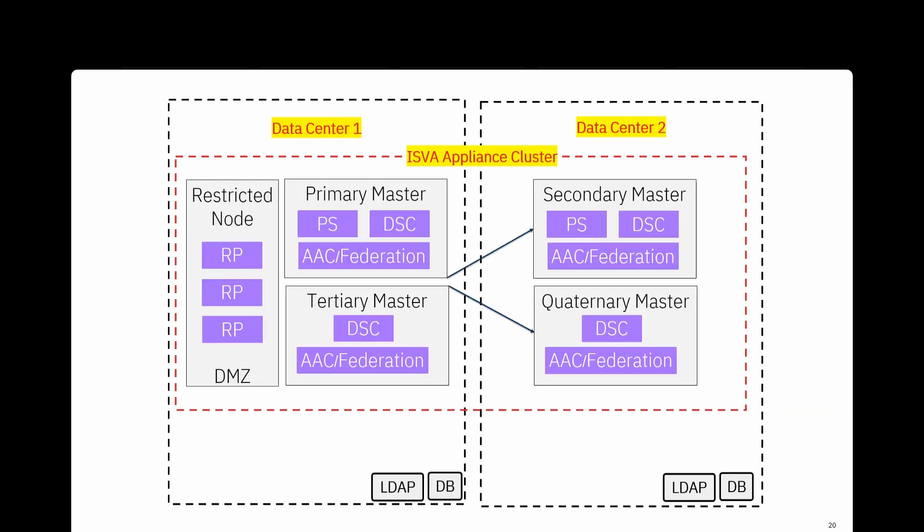Each appliance hosts different components: the restricted node hosts the reverse proxy and handles all incoming public traffic. The primary master runs the policy server, distributed session cache, and AC federation runtime, and similarly the secondary master. If there are network connectivity concerns between data centers, you may keep both primary and secondary masters in the same data center and move the tertiary to data center two.